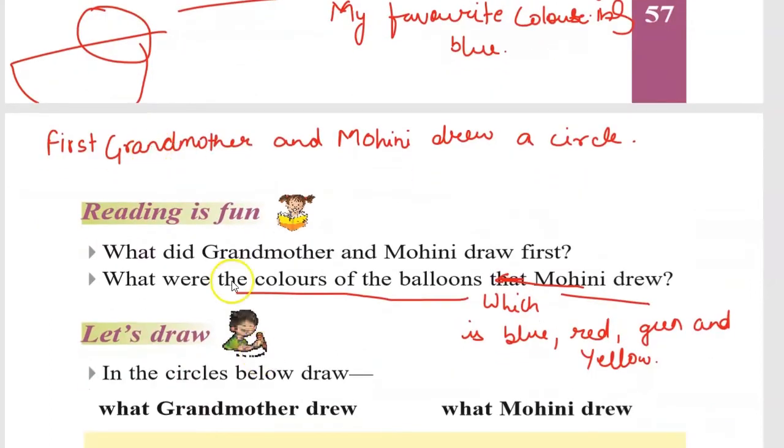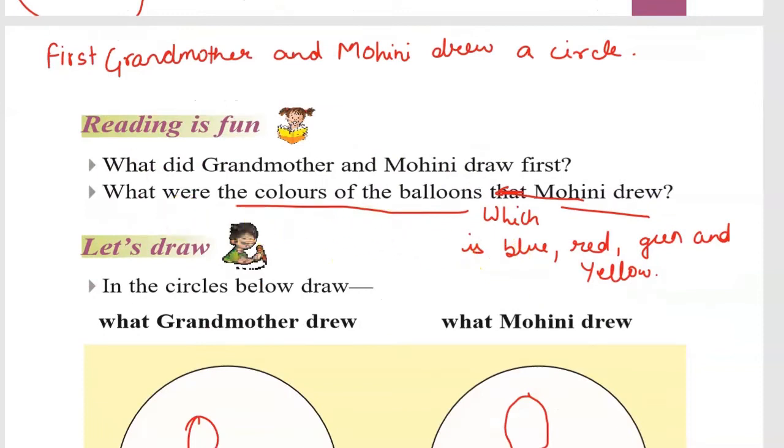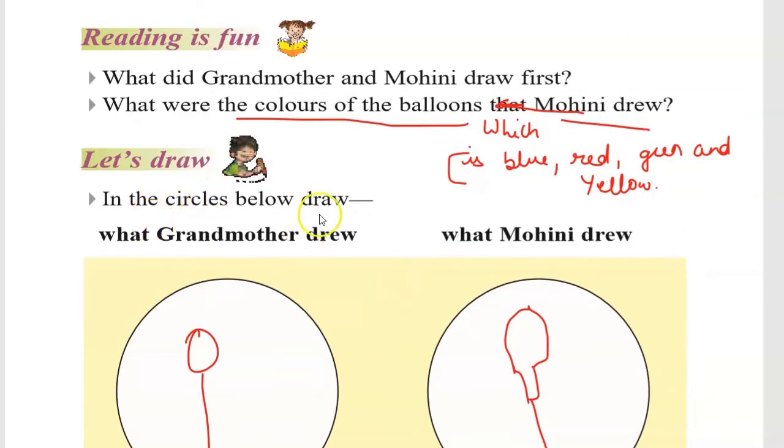Reading is fun. What did Grandmother and Mohini draw first? Grandmother and Mohini drew a circle. What were the colors of the balloons that Mohini drew? The colors of the balloons which Mohini drew are blue, red, green and yellow. Now let's draw in the circle below what Grandmother drew.